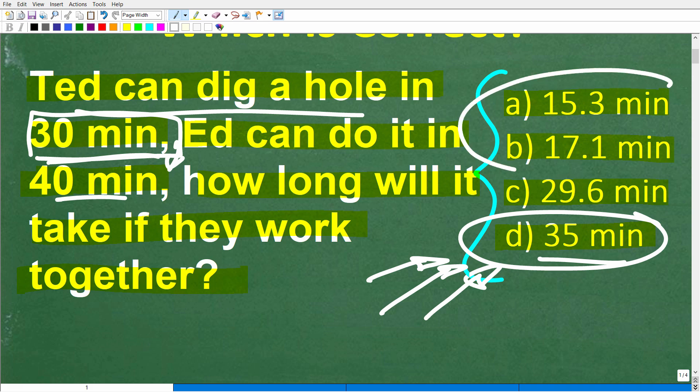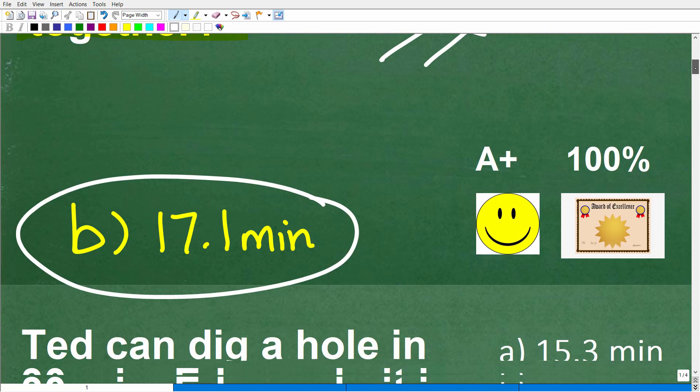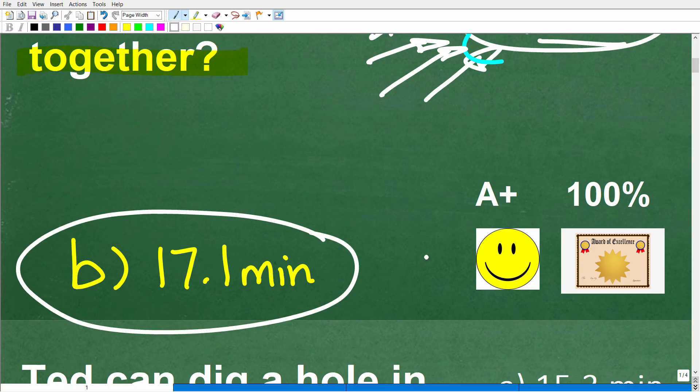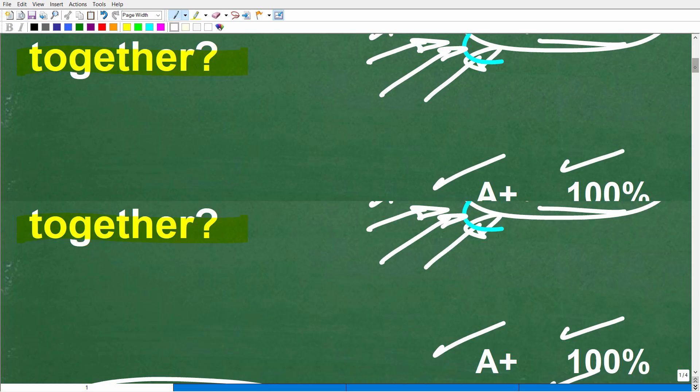Hopefully, if you took a guess here, you were thinking in terms of these two numbers, or maybe even this number. That's why I said be careful. But this particular problem is quite interesting. If you got this right, you'd definitely get a happy face, an A+, a 100%, and a Certificate of Excellence.